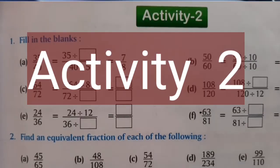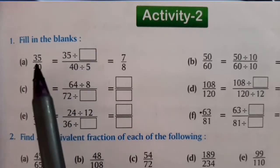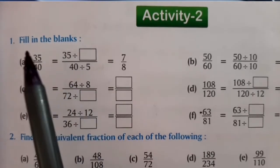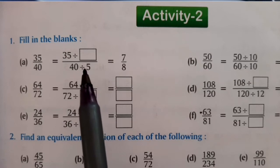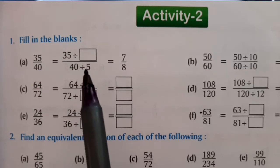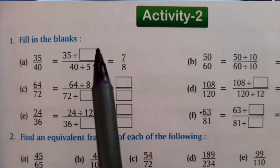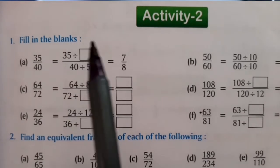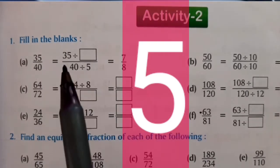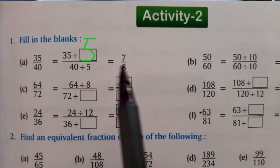Question number 1. Fill in the blanks. The fraction is 35 upon 40. Here we are dividing the denominator by 5. Whatever number we are dividing with the denominator, we have to divide the same number with the numerator also. So here, if I am dividing the denominator by 5, I have to divide the numerator also by 5. So here 5 will come. 35 divided by 5 is 7 and 40 divided by 5 is 8.